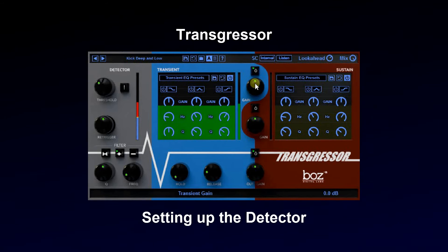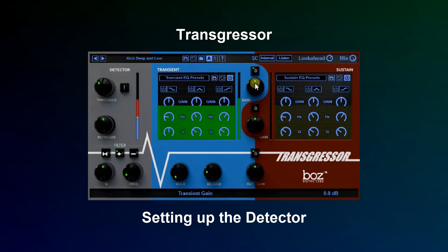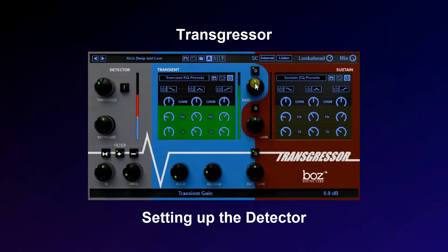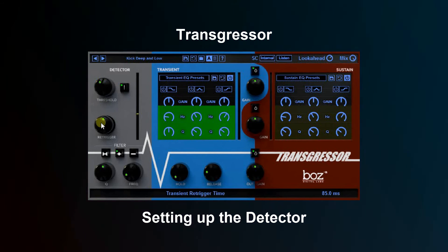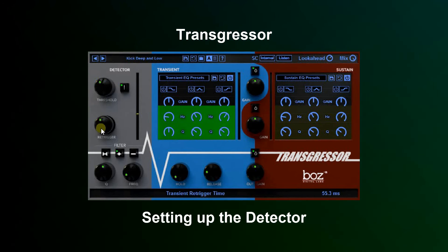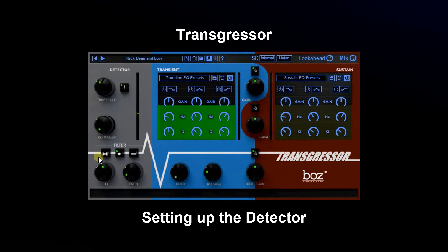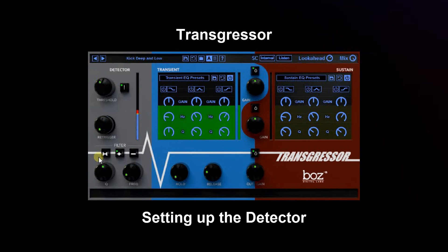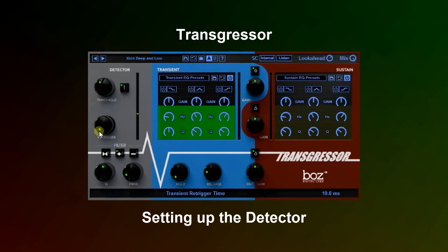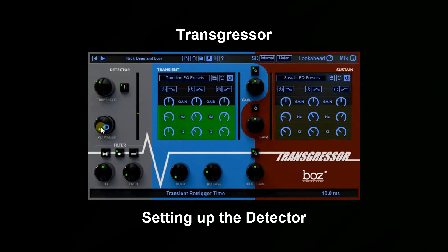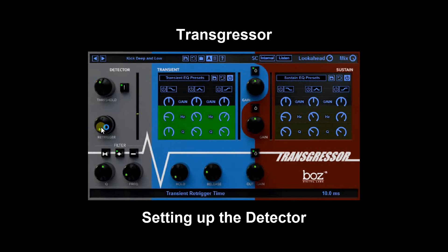So let's listen to what we have now. The next thing we want to do is make sure we have this re-trigger set up correctly. If I have that on very short, you'll notice right away that that is not desirable. What it's doing is telling it how long it's going to look for a transient again after one has hit — it's too short, so it's constantly going off.